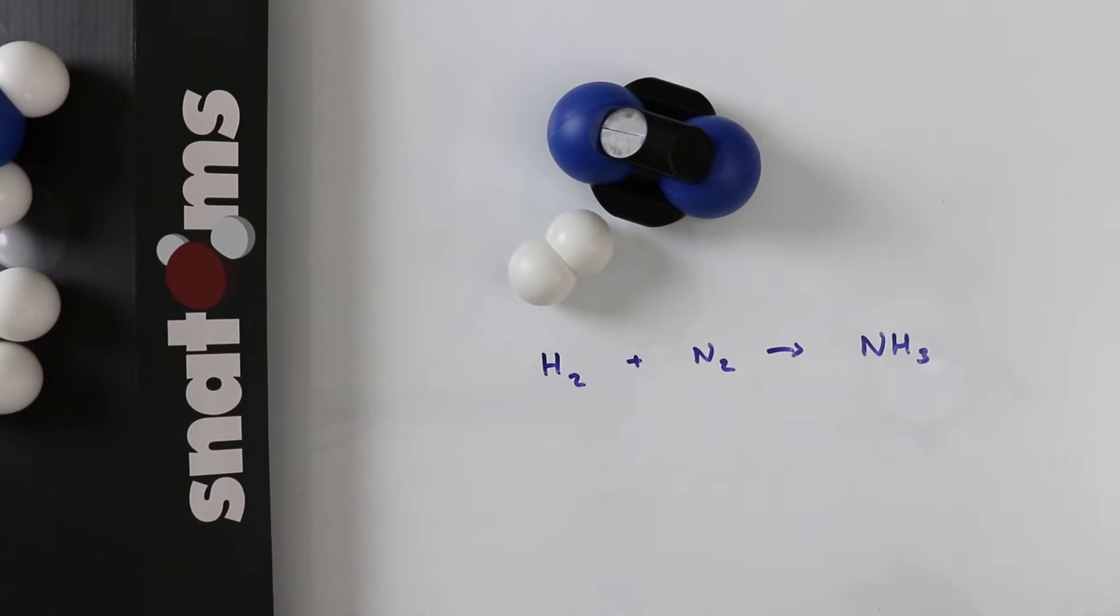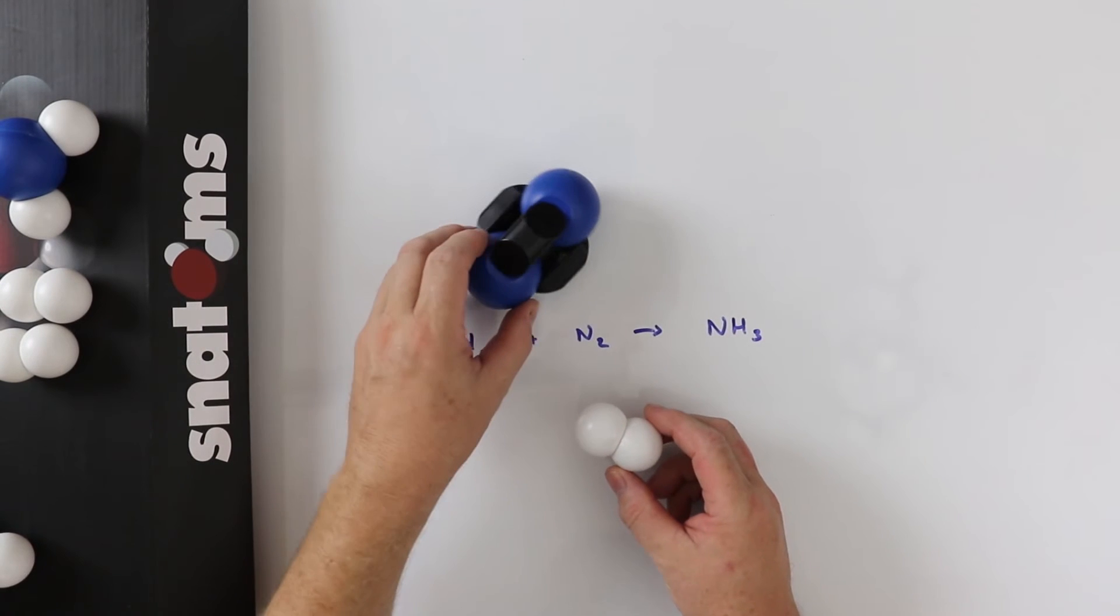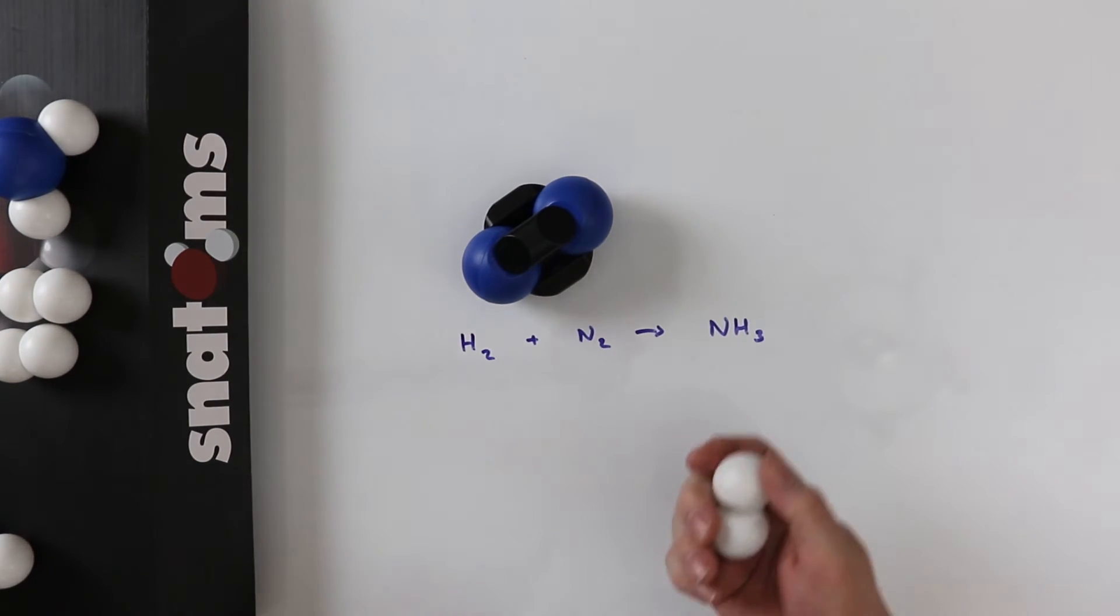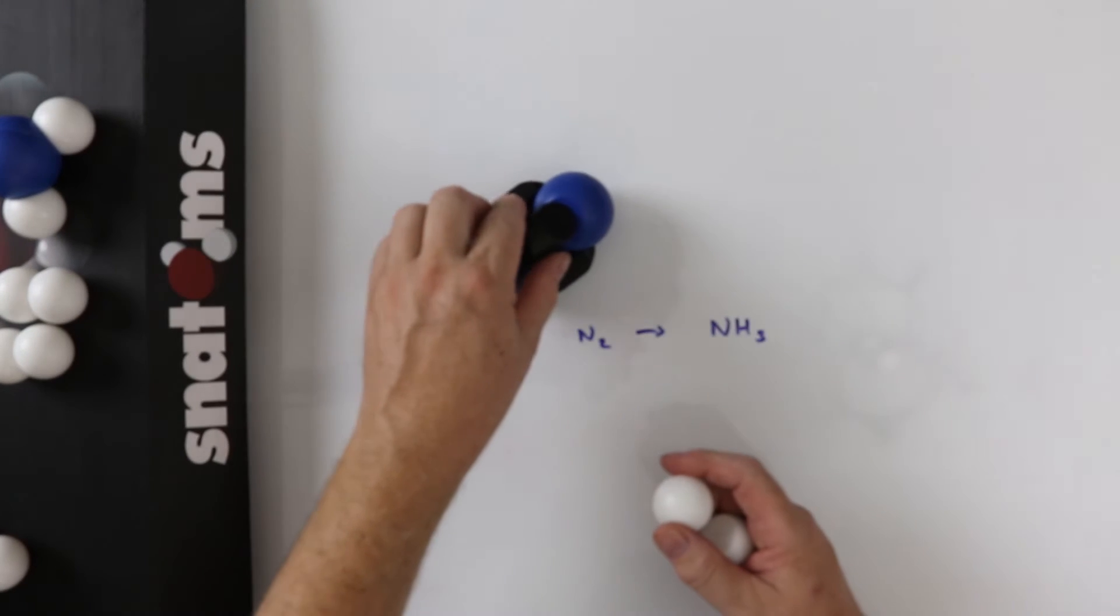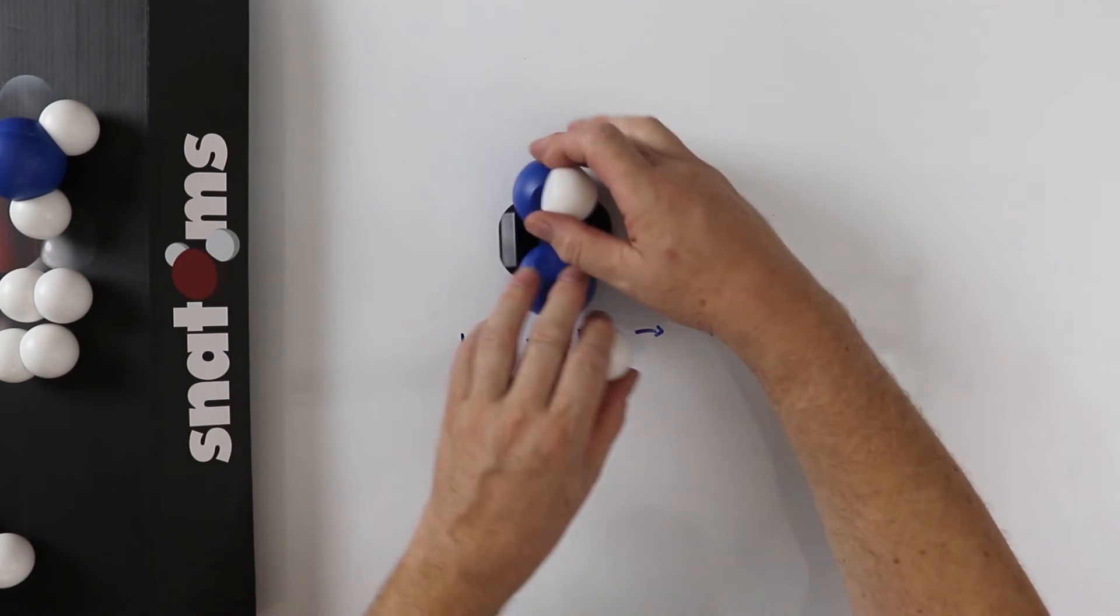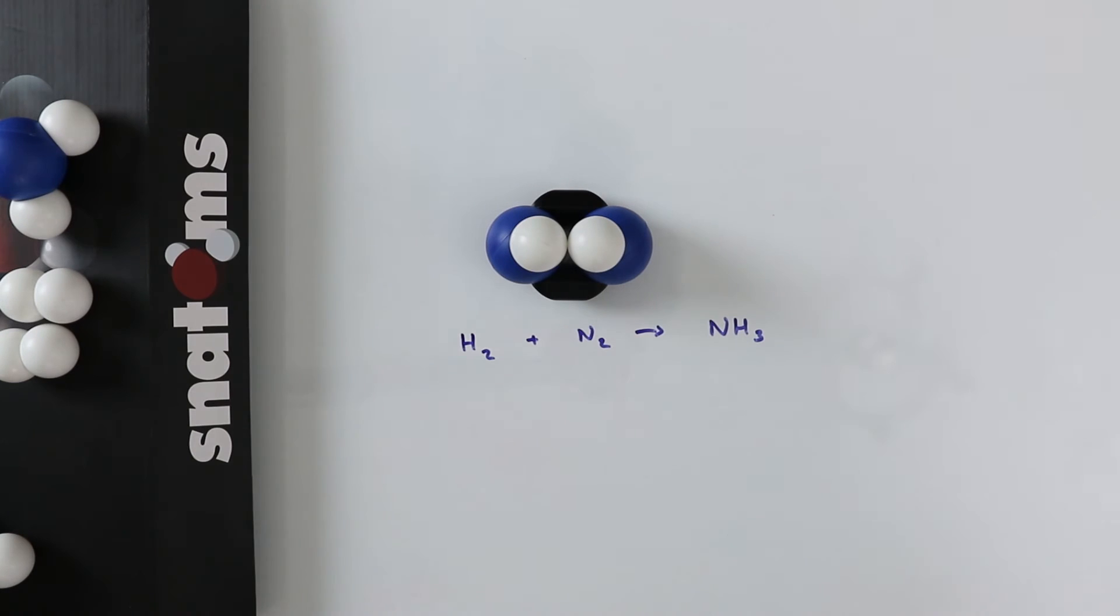Now we start the reaction. We react one molecule of hydrogen with one molecule of nitrogen. We can look at this reaction as each hydrogen atom breaking a bond. So we'll break this bond and the triple bond is broken and one hydrogen molecule has been used up.